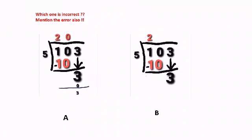You have to follow the steps for long division: first divide, multiply, subtract, then bring down and repeat until you get 0.